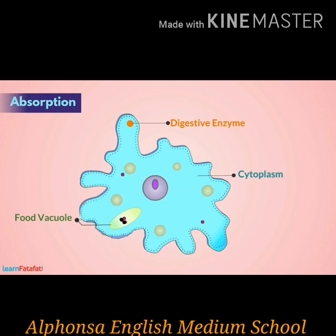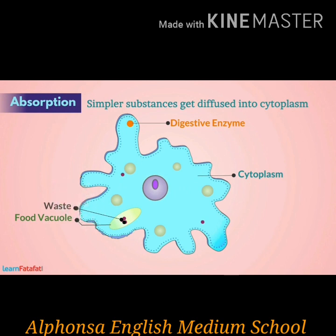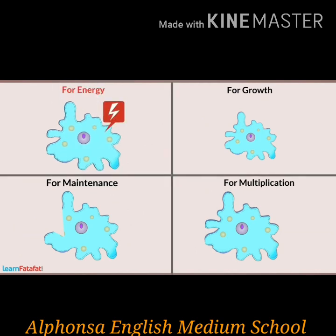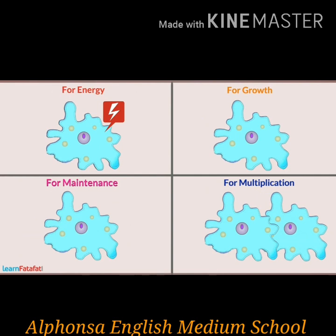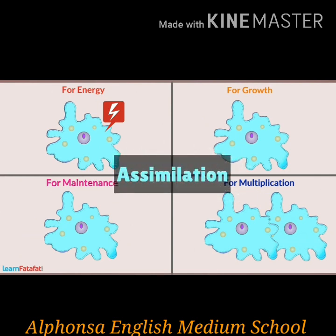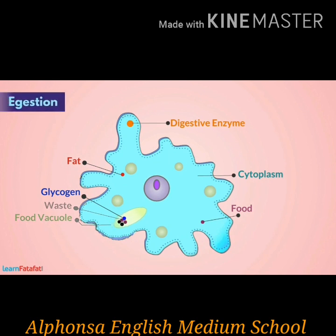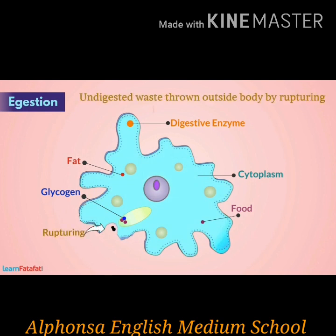The next step in amoeba is digestion — the process of breaking down complex food into simpler ones. Digestive juices are secreted into the food vacuole and, with the help of enzymes, complex food is broken into simpler ones inside the food vacuole. After digestion, the digested food is absorbed into the cytoplasm by diffusion — this is called absorption. The absorbed food is used for energy, growth, maintenance, and multiplication — this is called assimilation. The undigested food materials are moved to the vacuoles and diffuse out through the cell membrane, which is the removal of waste materials from the body.